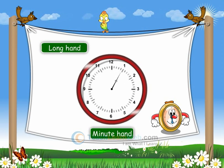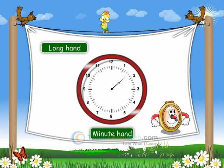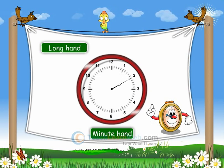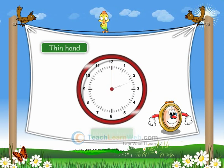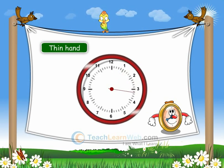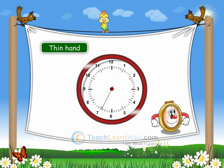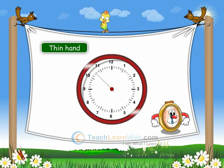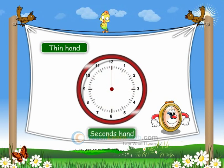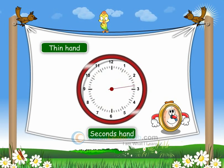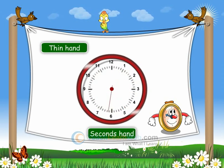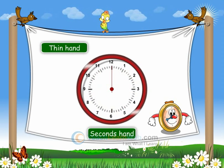The minute hand moves for each minute. The other thin hand, which moves fast, is called the seconds hand. It moves for each second.